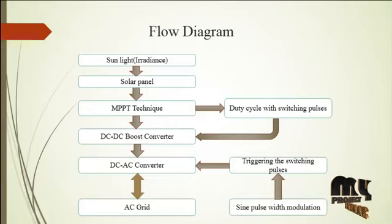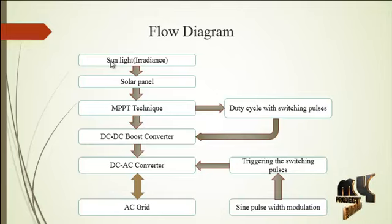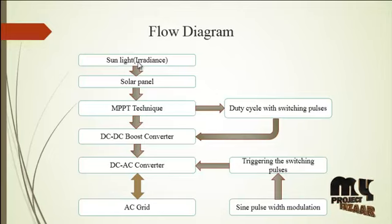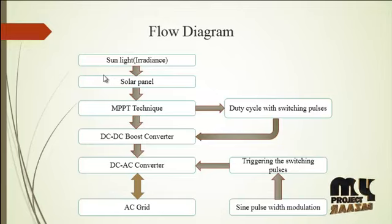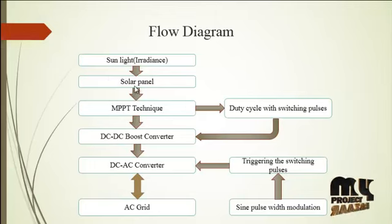We are going to discuss about the flow diagram of our product. First, we look at the irradiance — irradiance is the solar sunlight input level. We set the irradiance input level to 1000. Our photovoltaic system uses a solar panel, which is one of the best renewable resources in the world. We use a 72-cell solar array configuration.